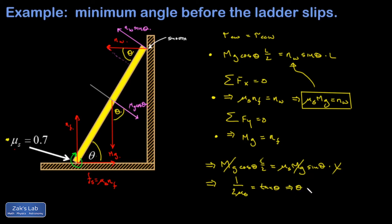And that means theta, the angle at which this thing is just about to break loose, is the inverse tangent of 1 over 2 mu_s, so there's our general solution to the problem.